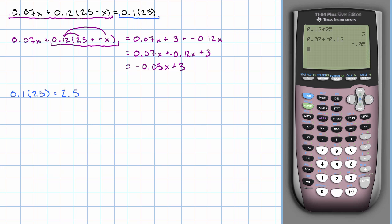Okay. Now I can go back to the original equation. And I've got negative 0.05x plus 3, and that's going to be equal to 2.5. Now we know what to do, right?